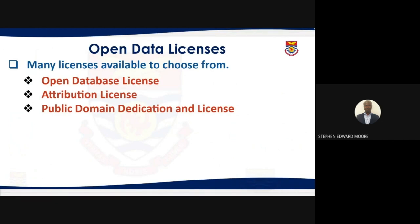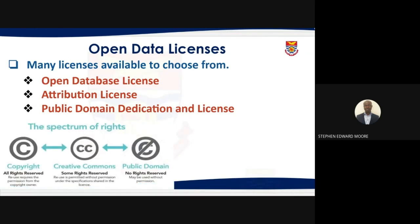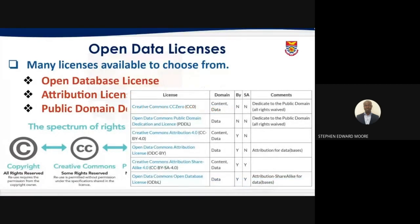There are many types of licensing on data. Open data does not mean it is free of a license. There are open data licenses, attribution licenses, and public domain dedications. Your data must always come with a license — it can be copyright with all rights reserved, Creative Commons with some rights reserved, or public domain with no rights reserved. These are important considerations for anyone creating, using, or sharing open data.